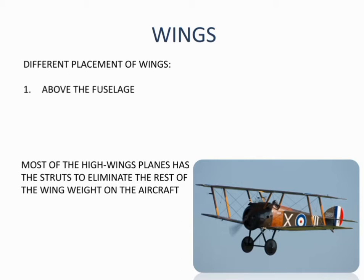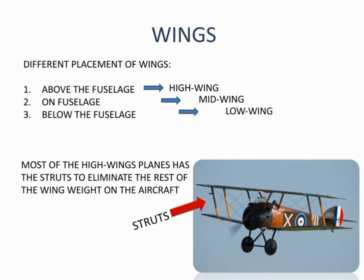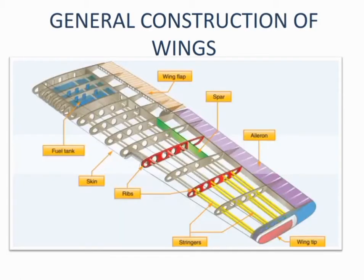Wings can be placed above the fuselage, on the fuselage, or below the fuselage. Wings above the fuselage are referred to as high wing. On the fuselage, it is referred to as mid wing, and below the fuselage it is referred to as low wing. Most high-wing planes have struts to eliminate the stress of the wing weight on the aircraft.